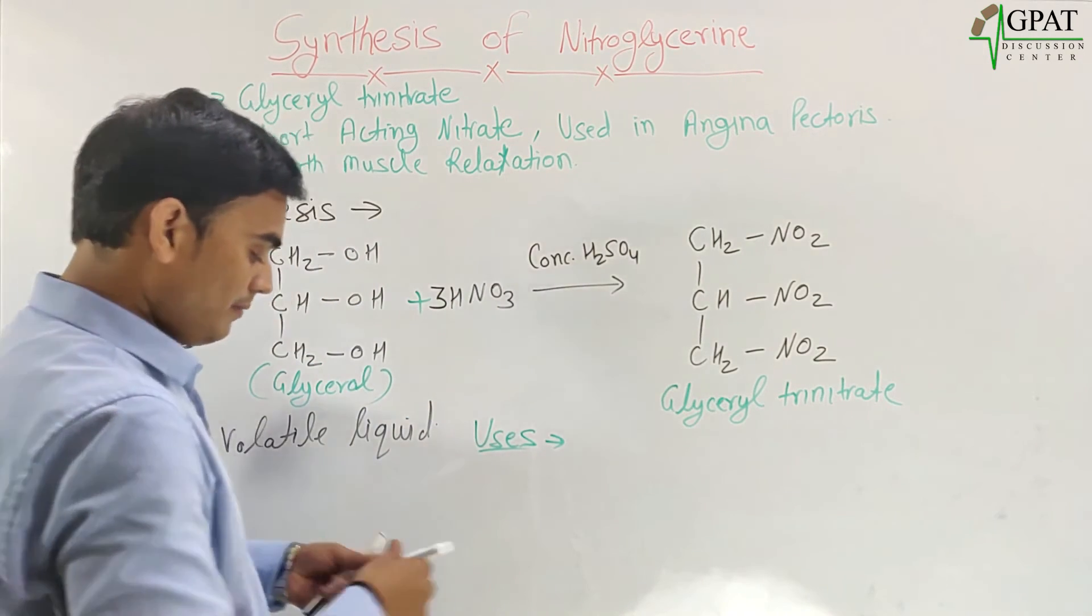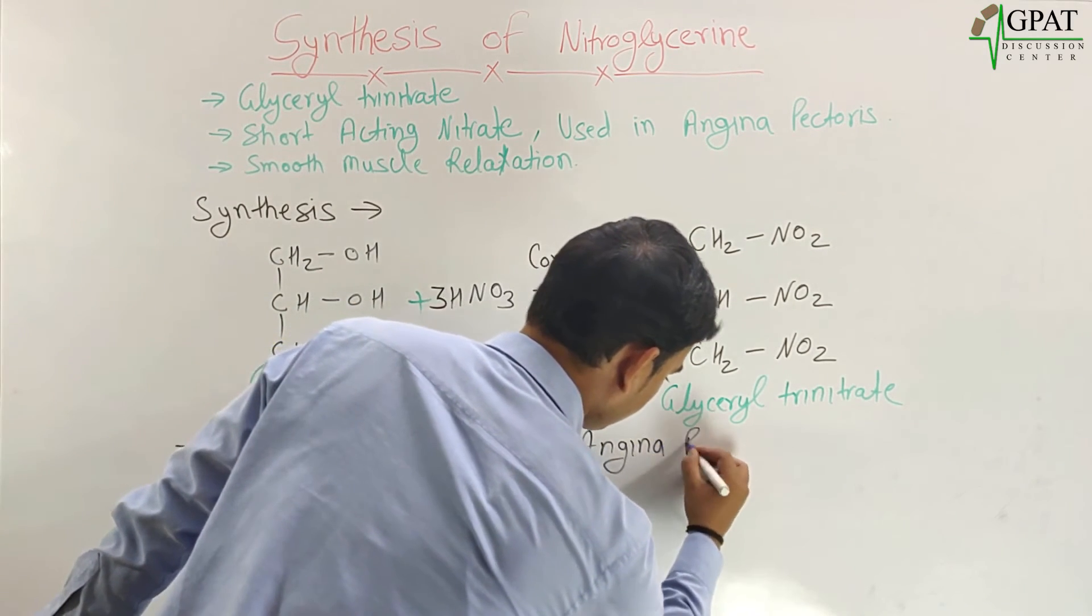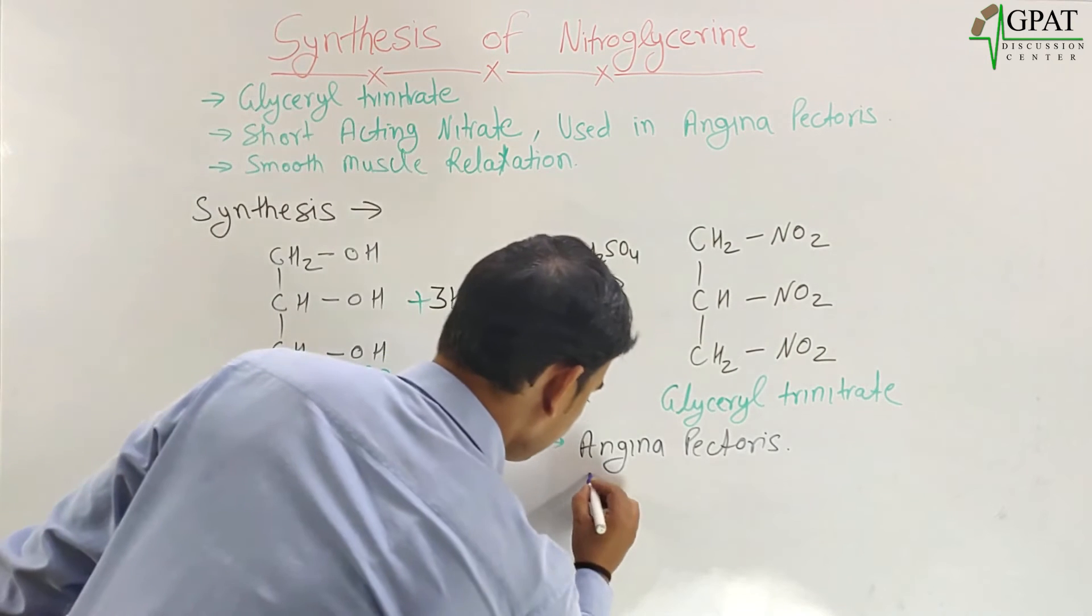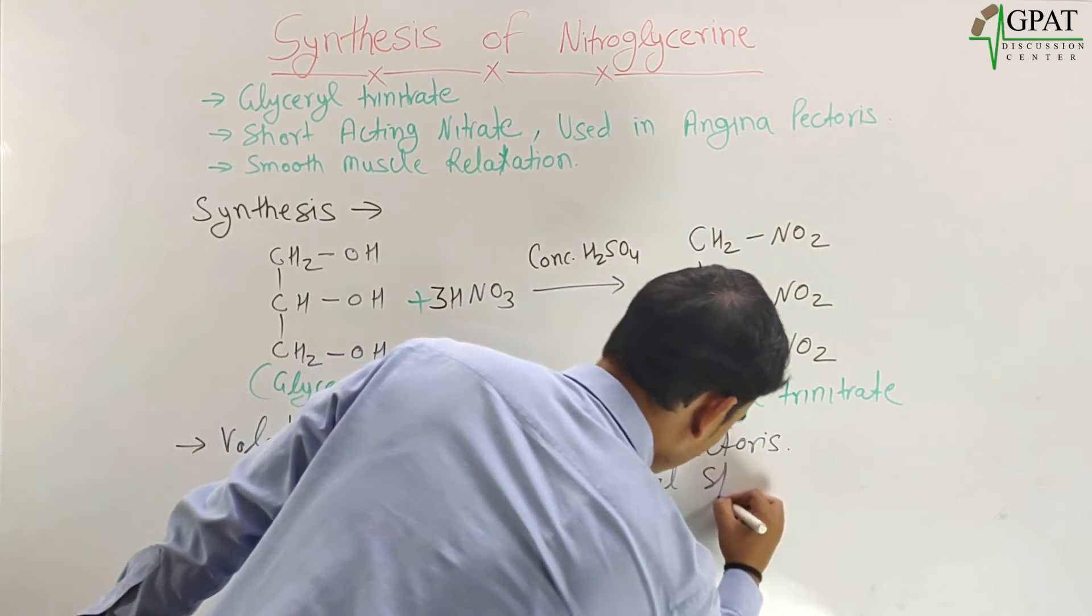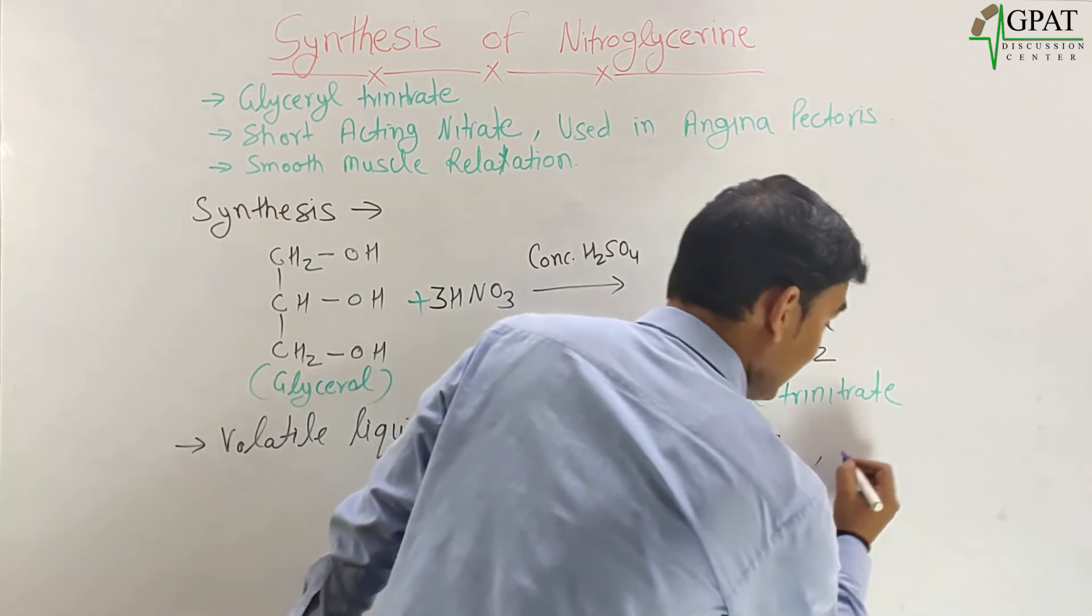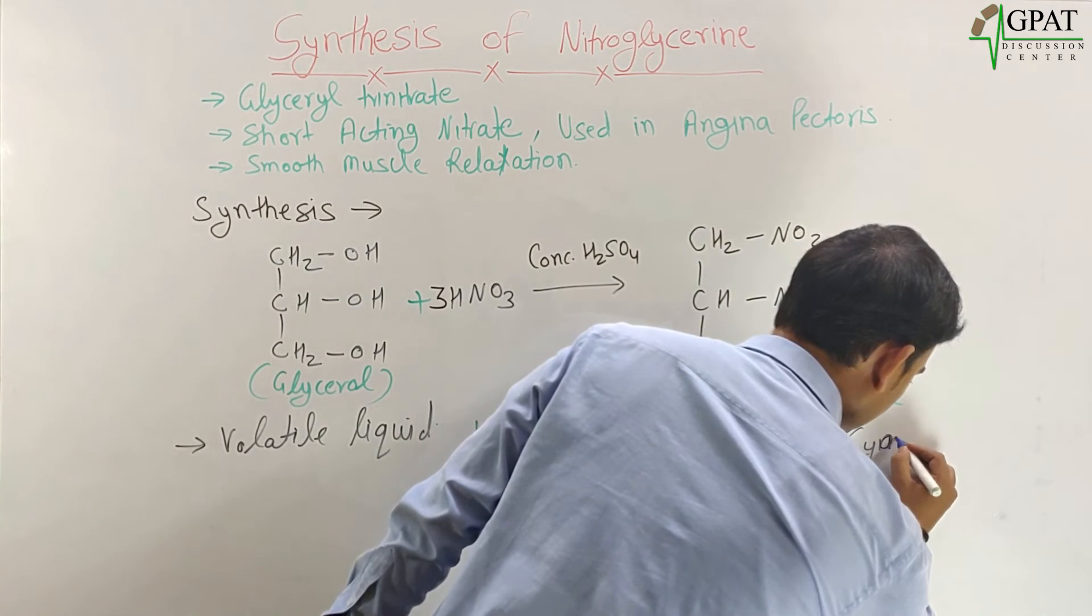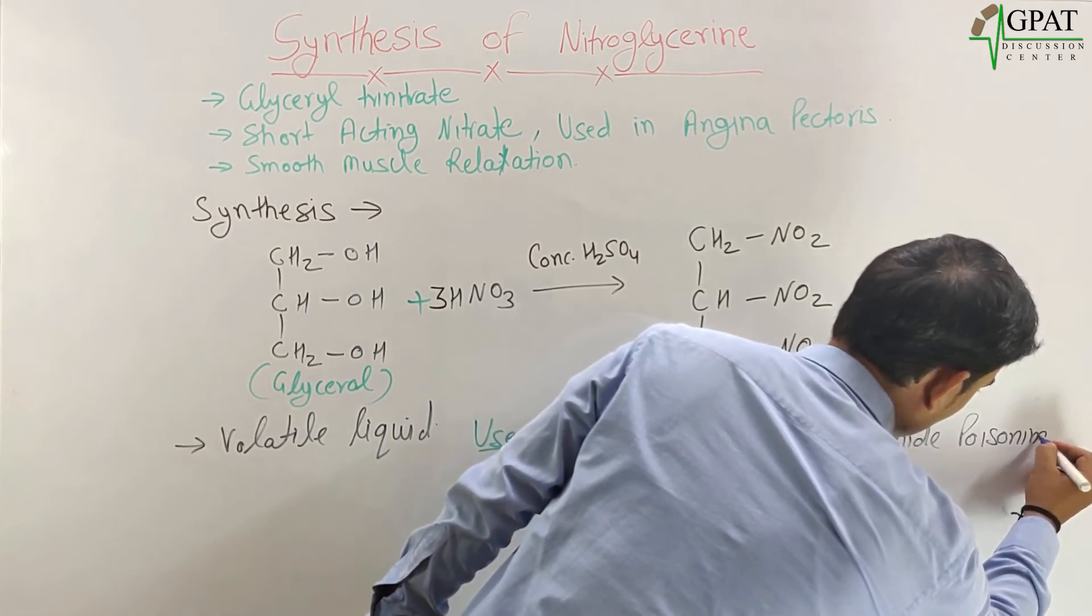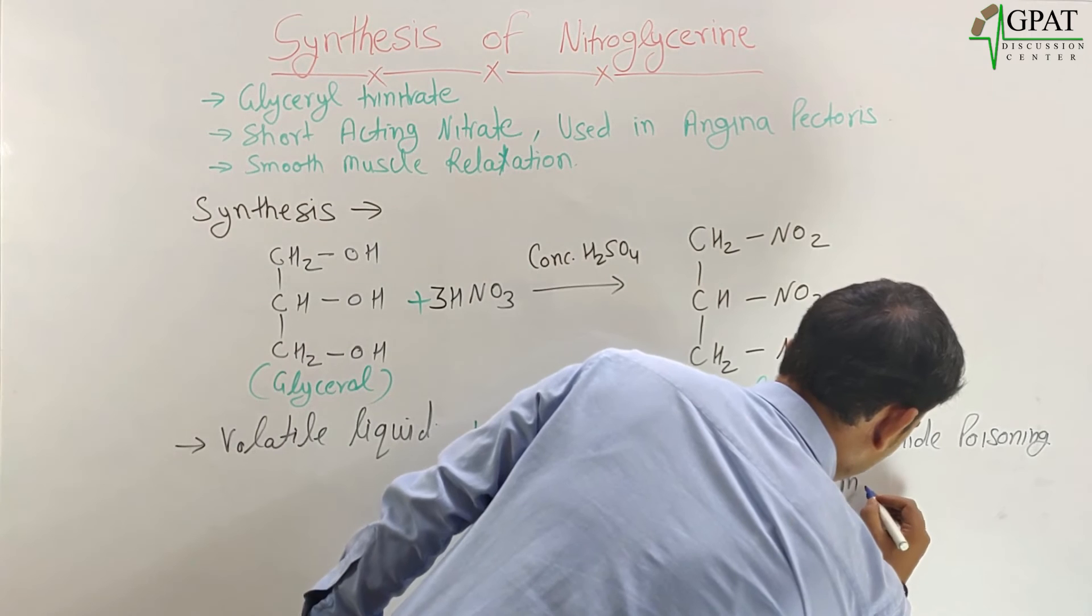And other uses, if you talk about the uses of glyceryl trinitrate or nitroglycerin, mainly its use in angina pectoris, esophageal spasm, also used in cyanide poisoning, as well as myocardial infarction.